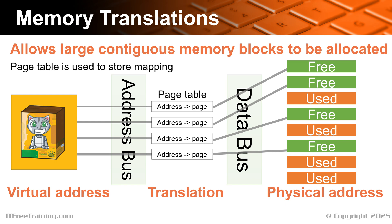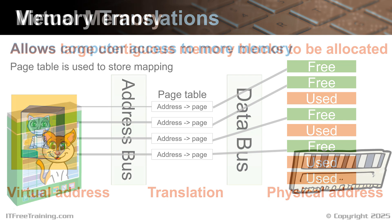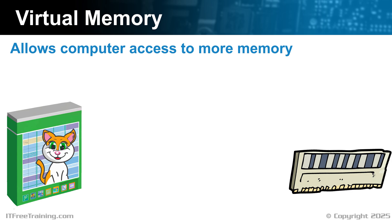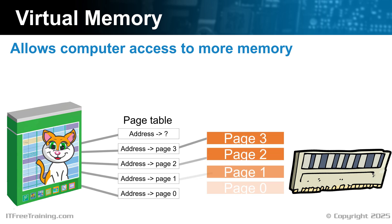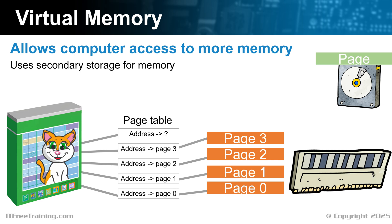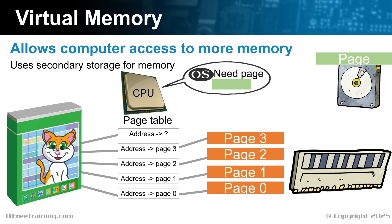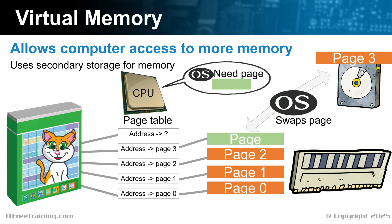Now that we have an understanding of how memory translation works, let's look at how we can use it with virtual memory. Virtual memory allows the computer to access more memory than it physically has. Consider an application running on the computer that has a block of memory available to it but is currently using more than is available. The page table has four pages mapped to physical memory, however it does not have enough memory to store the last page — this page is currently stored on the hard disk. When the application requests this page, the CPU requests it from the operating system. The operating system swaps the page on the hard disk with one of the pages in memory and updates the page table. This process is often called swapping, and since the page table is also being updated, you may also hear it called paging. Either term is correct and they are often used interchangeably.